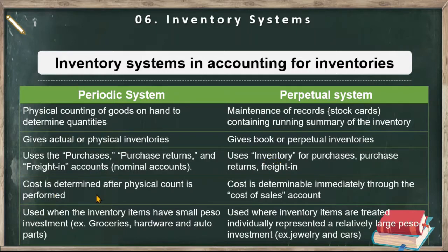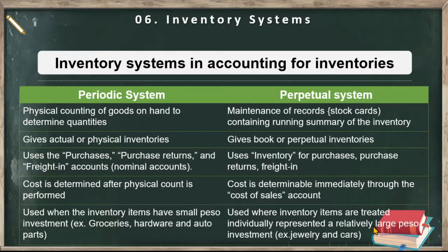For the periodic system, the cost is determined after the physical count is performed because there is a formula to get the cost of goods sold. But in the perpetual system, you can determine immediately how much is the cost because there is a cost of sales or cost of goods sold account. Also, the periodic system is used when the inventory items have small peso investment, like groceries, hardware, and auto parts. Meanwhile, the perpetual system is used for relatively large peso investment — for example, jewelry and cars.